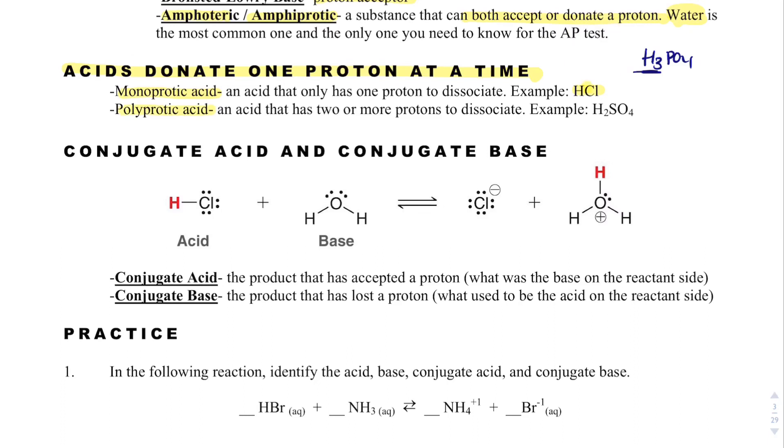Where a polyprotic acid would be something like H2SO4, where H2SO4 breaks apart into H+ and HSO4-, then HSO4- breaks apart into H+ and sulfate. So it only gives up one H at a time.